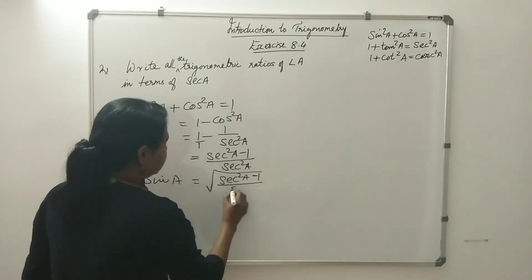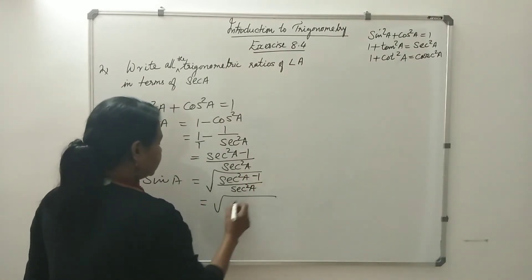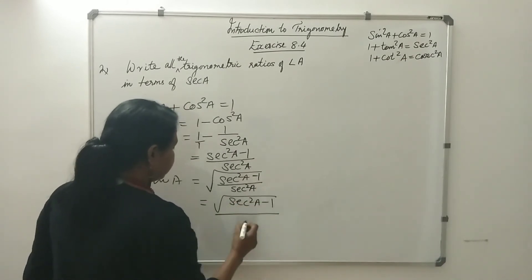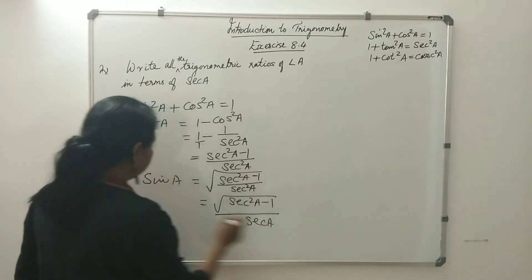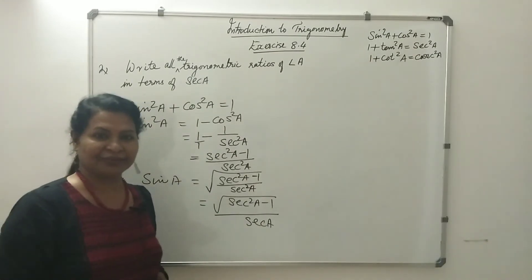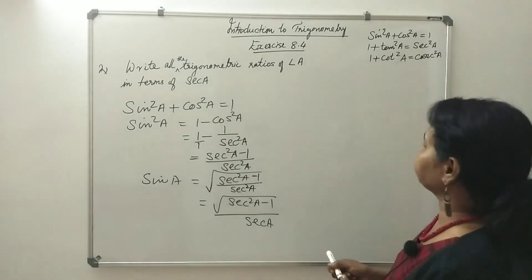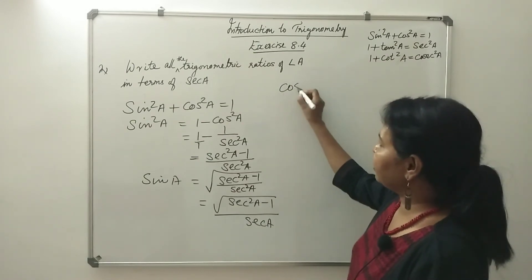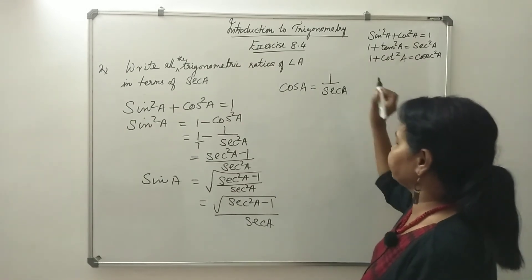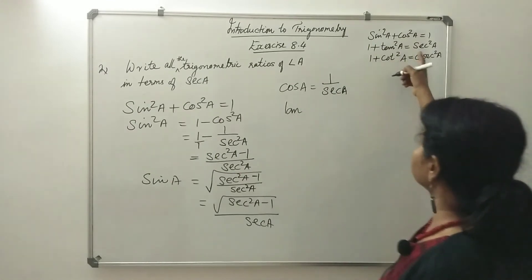So sinA in terms of secA is: square root of (sec²A minus 1) divided by secA. CosA in terms of secA is 1 divided by secA, since secA is the reciprocal of cosA.